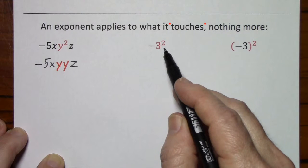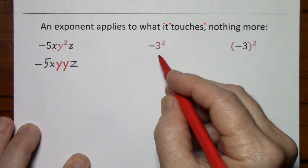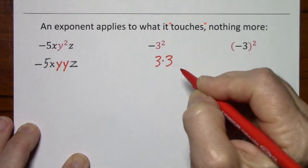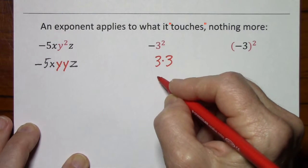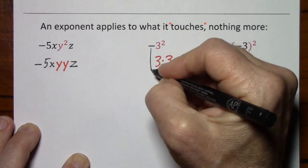But in this example, the 2 only applies to the 3. So if I want to show this in factored form and then simplify it, this yields 9. And this negative sign simply drops down.